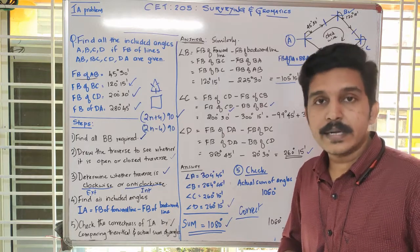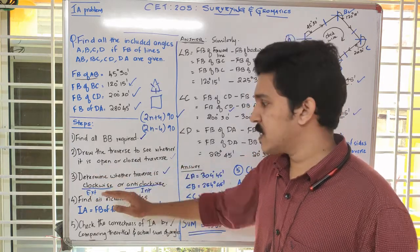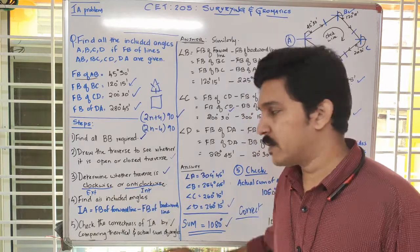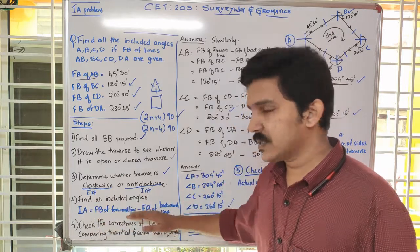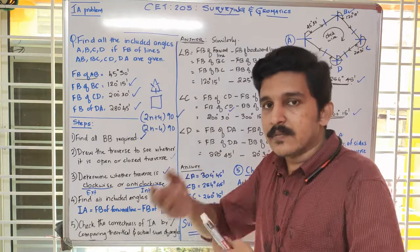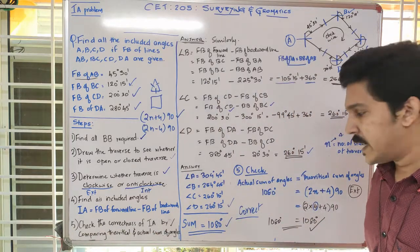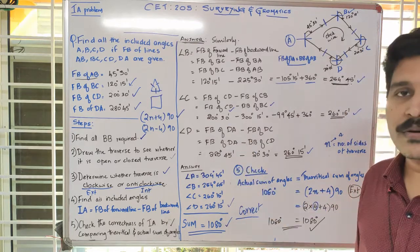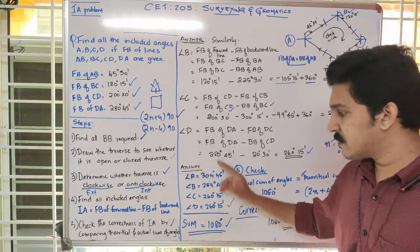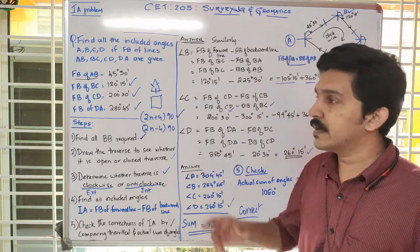This is how we solve included angle problems: find back bearings first, then draw the traverse to determine if it is open or closed and clockwise or anticlockwise. In a clockwise traverse we get exterior angles; in anticlockwise, interior angles. Apply the equation at each vertex, converting fore bearings to back bearings as needed. Finally, sum all angles and verify against the theoretical formula. If the check fails, recheck your substitutions. Thank you.